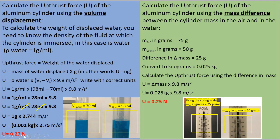Now let's calculate the upthrust force using the mass difference between the cylinder mass in the air and the cylinder mass in the water. So the mass in the air was 75 grams, the mass in the water 50 grams, and the difference in mass here is 25 grams. So now we need to convert this gram to kilos, so divided by 1000 and we have 0.025 kilos.